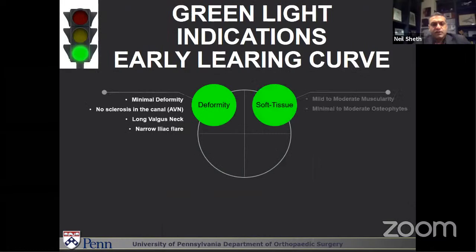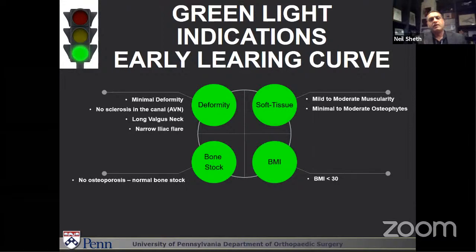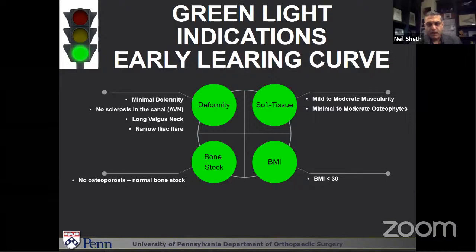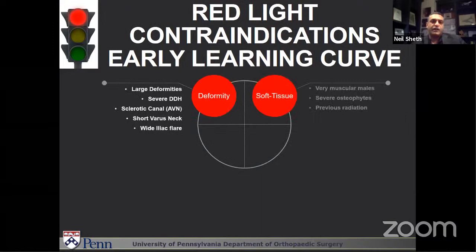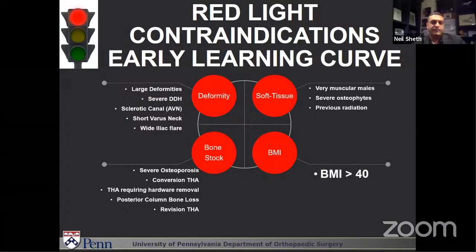Early in the learning curve, I looked at four components for green-light indications: deformity, soft tissue, bone stock, and BMI. I wanted patients with minimal deformity, no sclerosis in the canal, a nice long valgus neck, and maybe a narrow iliac flare giving you more space to work on the femur. Soft tissue: mild to moderate muscularity and minimal to moderate osteophytes. I did not want patients with severe osteoporosis, which increases the risk of periprosthetic fracture. More normal bone stock patients were selected early. And obviously patients who are thinner and not too obese. Contraindications early in the learning curve: you do not want patients with large deformities, severe dysplasia, or sclerotic canals with AVN. Short varus necks and wide iliac flares make it much more difficult to get the femoral exposure.